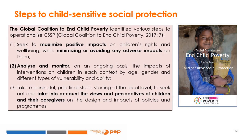The Global Coalition to End Child Poverty identified various steps to operationalize CSSP in their 2017 briefing paper. First, seek to maximize positive impacts on children's rights and well-being while minimizing or avoiding any adverse impacts. Second, analyze and monitor, on an ongoing basis, the impacts of interventions on children in each context by age, gender, and different types of vulnerability and ability. Third, take meaningful practical steps, starting at the local level, to seek out and take into account the views and perspectives of children and their caregivers on the design and impacts of policies and programs.